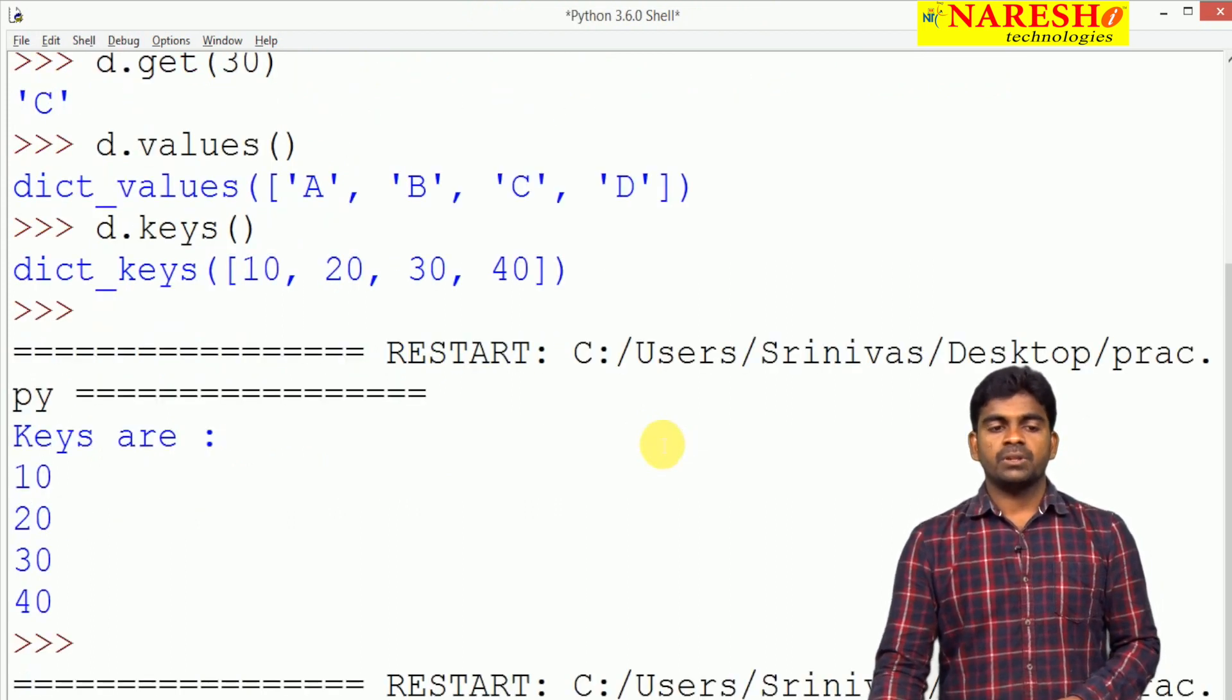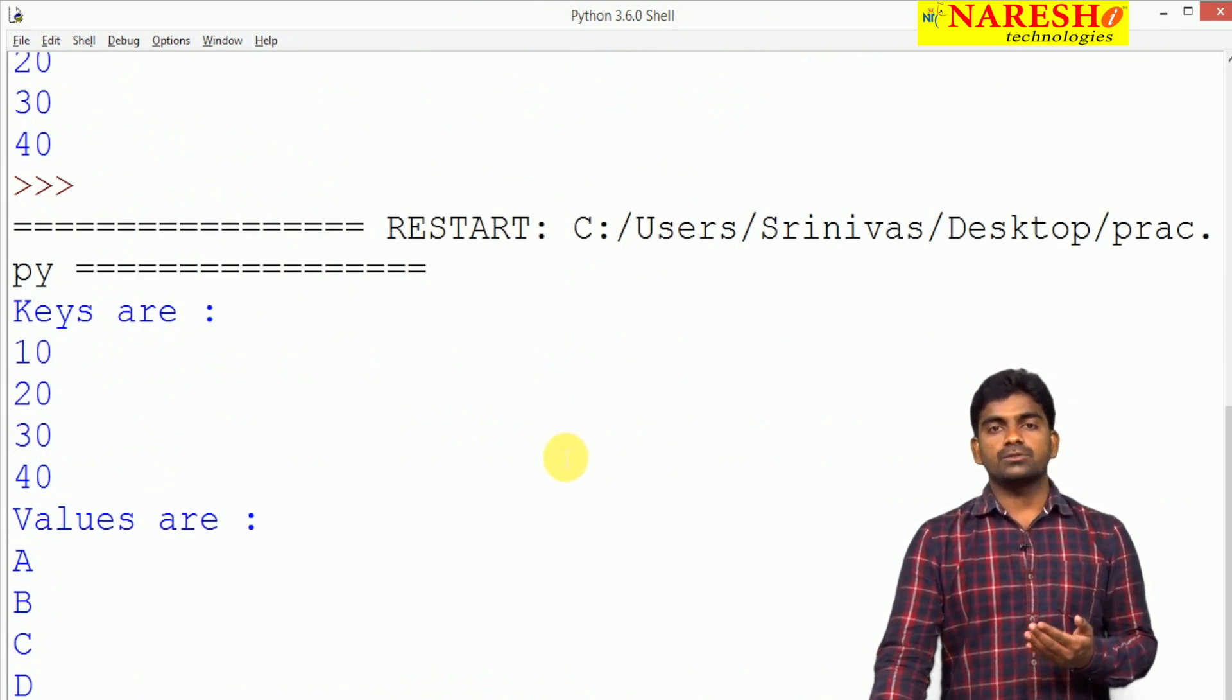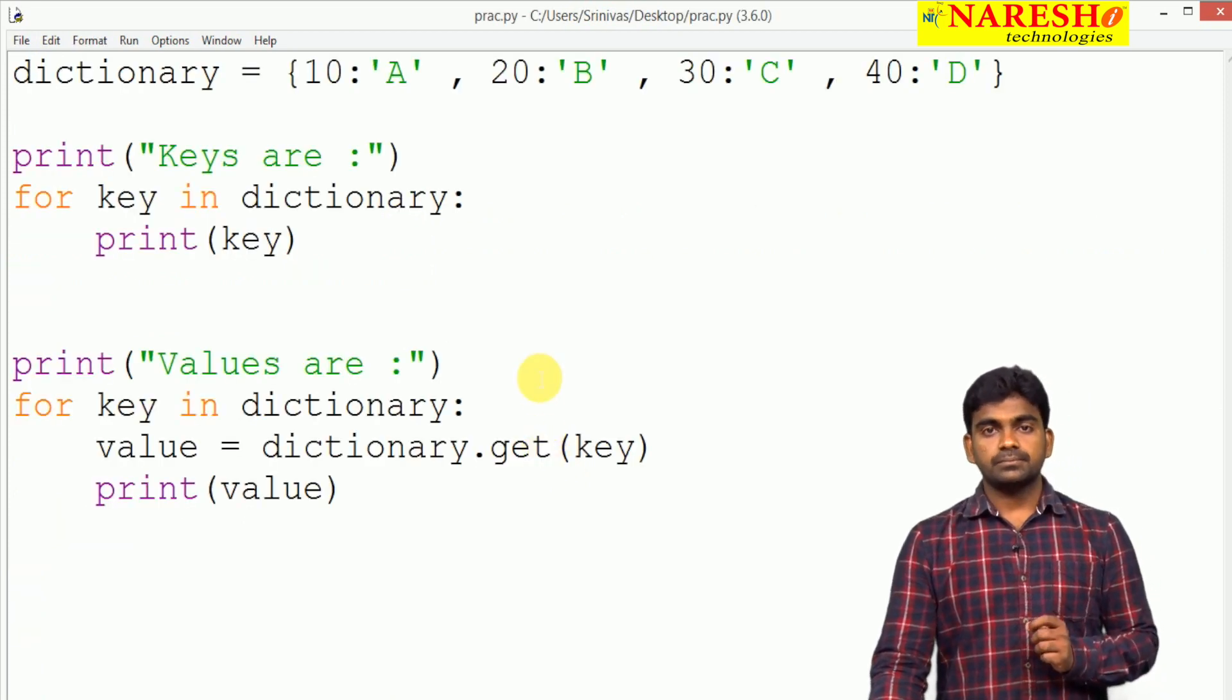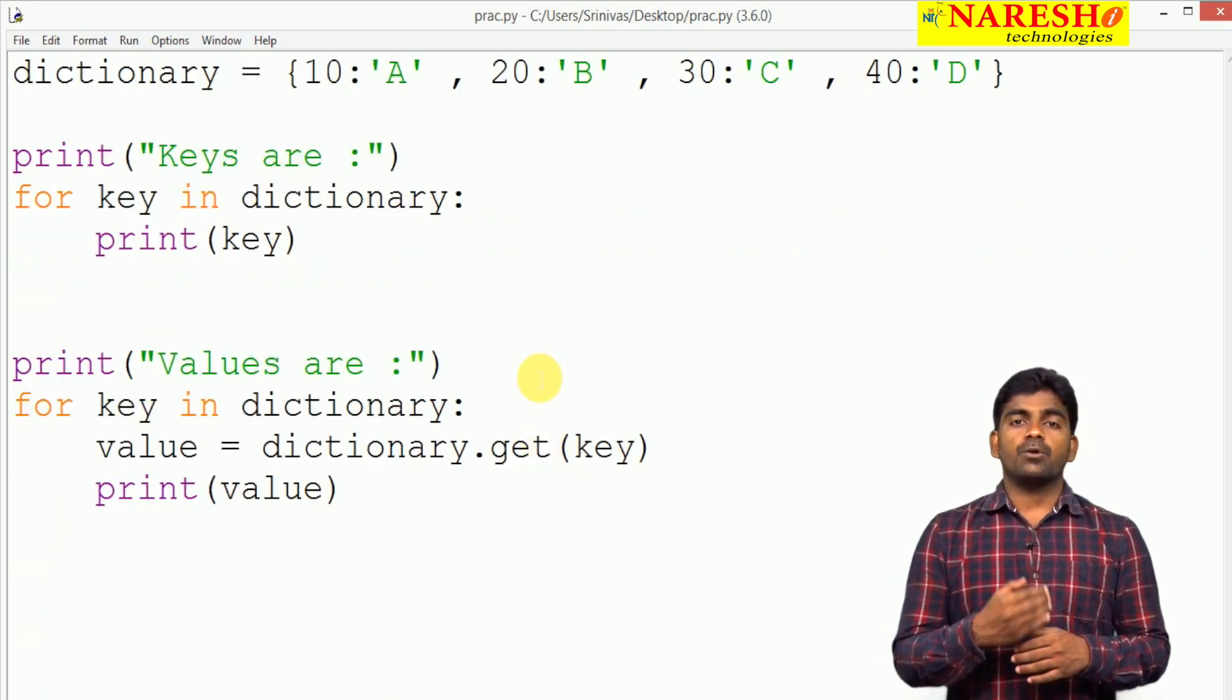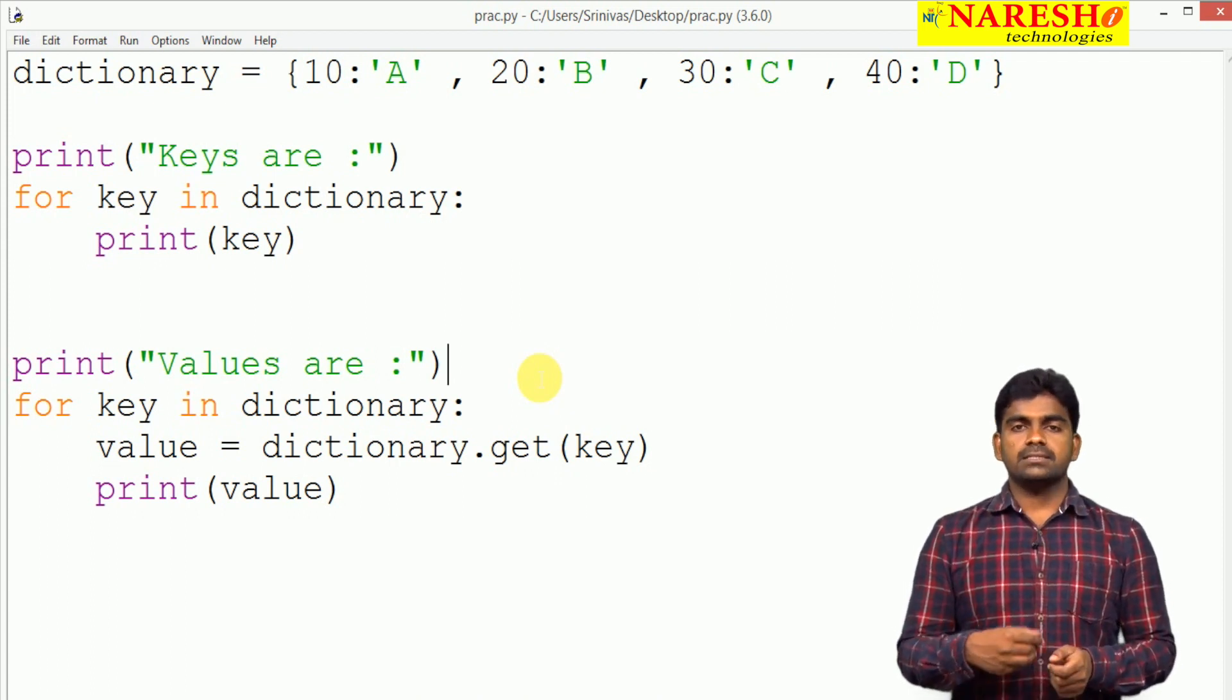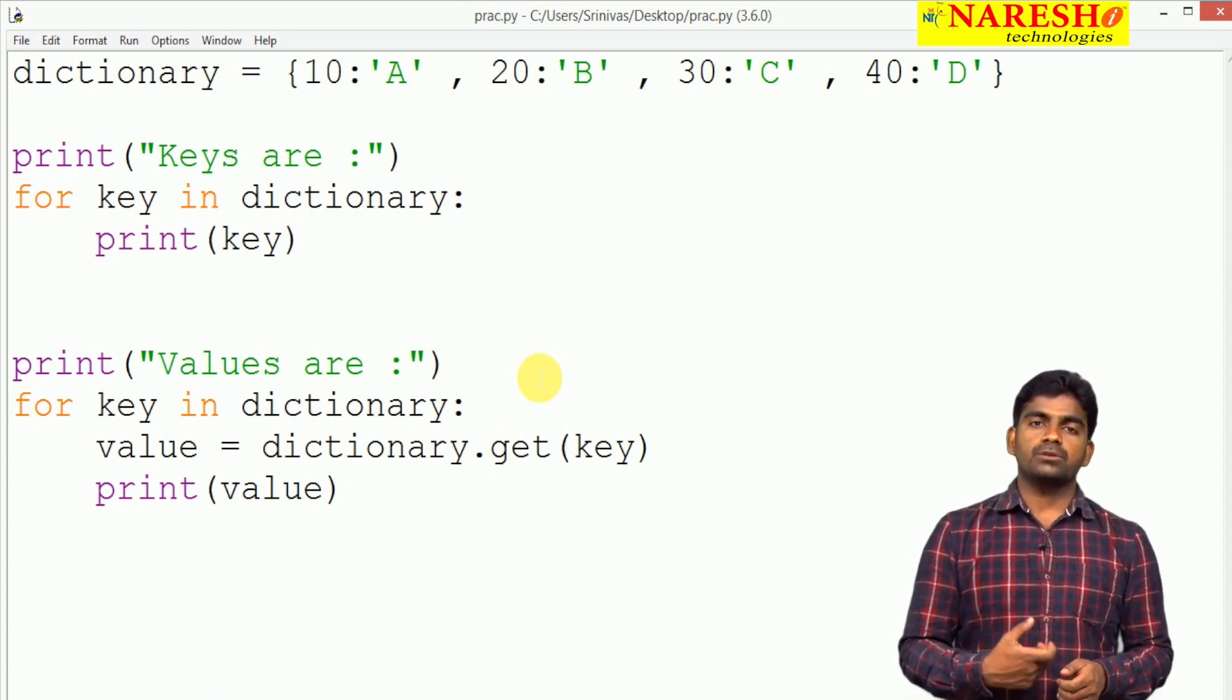Using for loop we can process the keys only. With the help of get function and by passing the key, you will get that value. When we execute this, first we are getting the keys and the corresponding values we are printing. This is how we are displaying. Dictionary is providing the predefined functionality. If you want to get the keys directly, you can use keys function, and directly we can use a values function also.